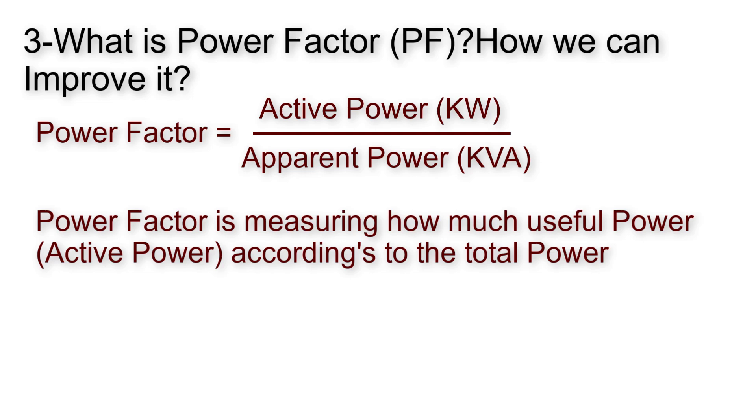Because we have a wasted power which is the reactive power measured in kilovolt ampere reactive. So power factor is a factor from zero to one. As we come closer to one this means that most of the total power is useful power.